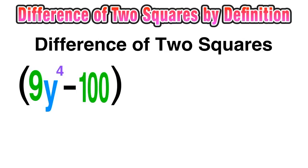Now again, this is a difference of two squares. We know that 9 is a perfect square, and we'll explore in a second why 9y to the fourth is also a perfect square, and finally we know that 100 is a perfect square as well.